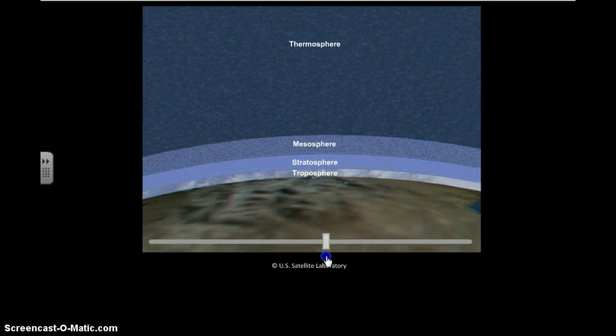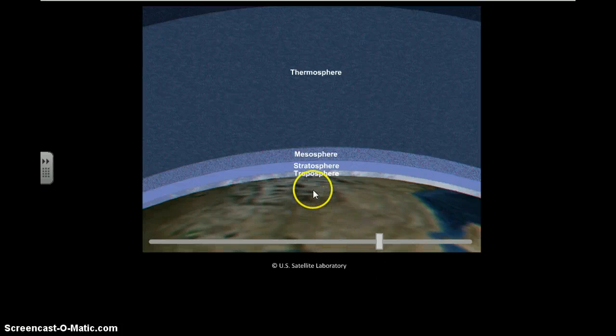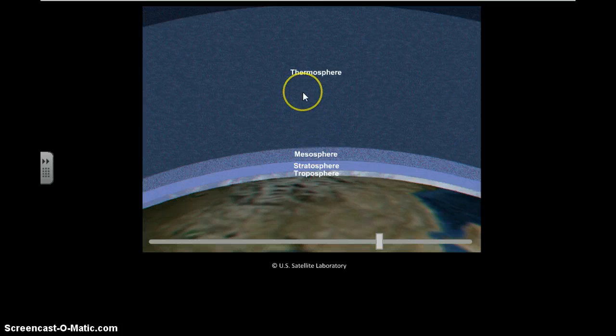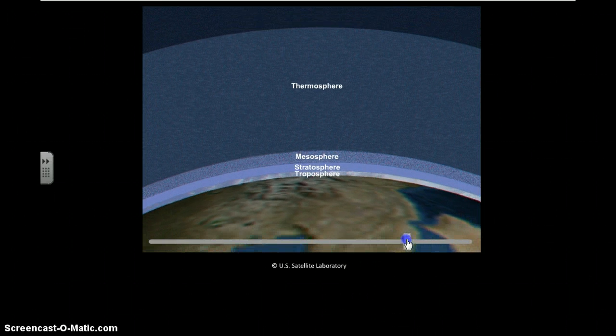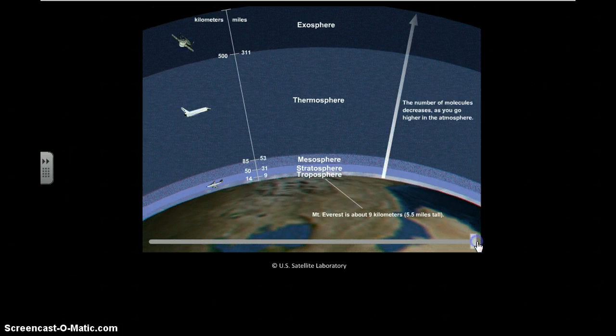When we get to the next layer you'll notice the size of this layer. It's called the thermosphere. Comparative to the other ones the troposphere is about half the size of the stratosphere. The stratosphere is about half the size of the mesosphere and the thermosphere is probably ten times as thick as the mesosphere. And then once we get to the thermosphere we get out to the farthest one out which is the exosphere.